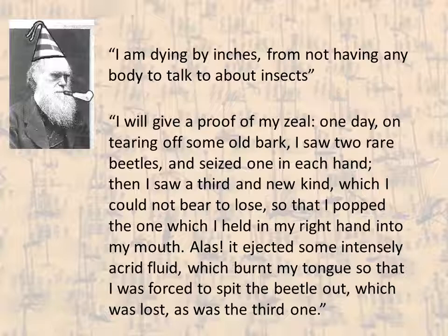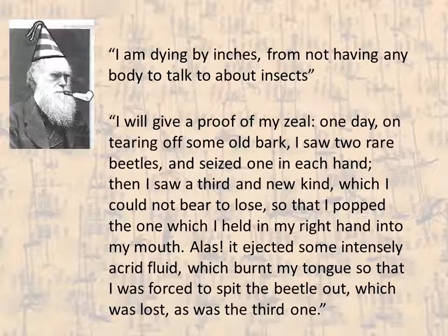Later in his life, Darwin recalled an incident when writing his autobiography about some of these beetle-collecting trips at Cambridge. He recalled seeing two rare beetles at once and then finding a third one he couldn't bear to lose. So he popped one of the beetles he was already holding into his mouth, and unfortunately it ejected some foul defence fluid that made him spit it out — so he lost the other beetle he was trying to collect as well.